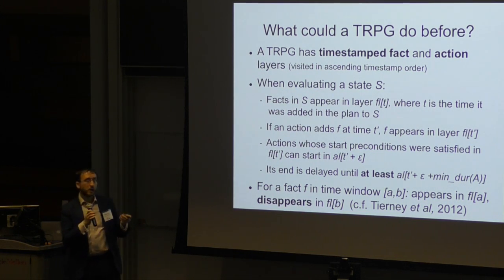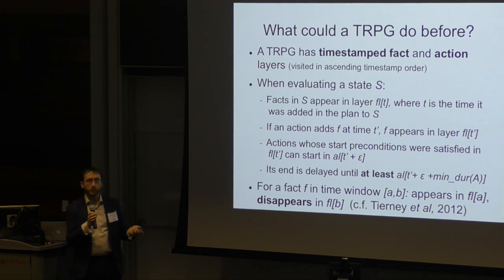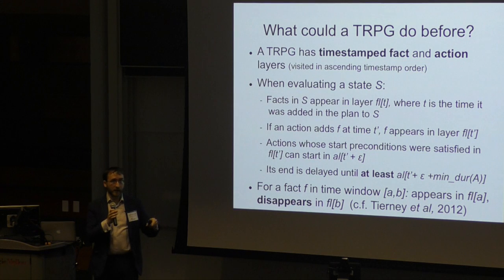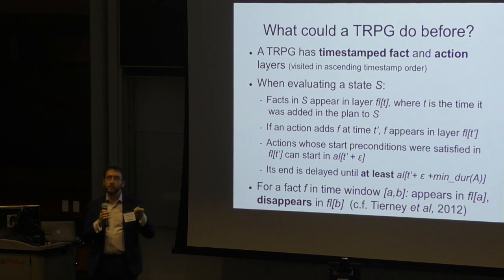If you have a time window in which a fact is going to appear at the start and then disappear at the end, you can actually put that negative effect into the relaxed planning graph. So you can say at this specific layer, it represents the end of the time window in which we had access to this fact. If an action needs that precondition and it hasn't appeared by that layer, it can then never appear. So it's a piece of work I did with Kevin Tierney and some others in 2012. You can get nice results there if you have time windows. But what we're looking at here is delete effects attached to the ends of actions that have started but not yet finished.